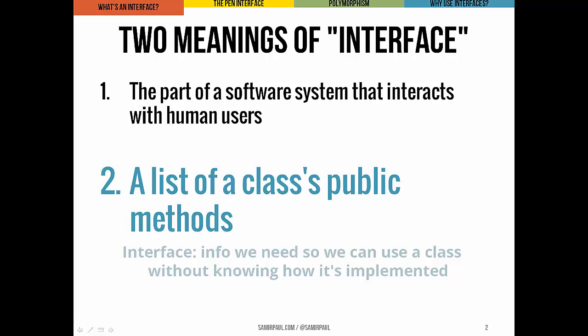A class's interface provides all the information that we need to use that class without revealing anything about its implementation. That's one of the beautiful things about object-oriented programming — we can define how these classes will work without the user or client having to care at all about how we actually developed it, about what the guts of it, what the code inside looks like.